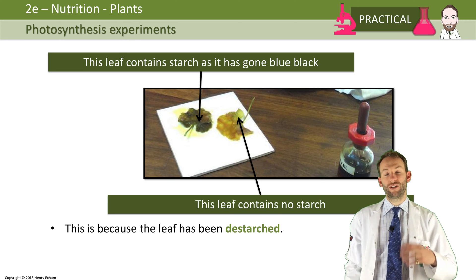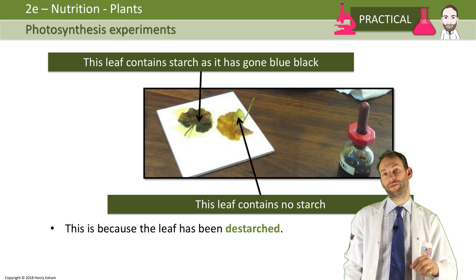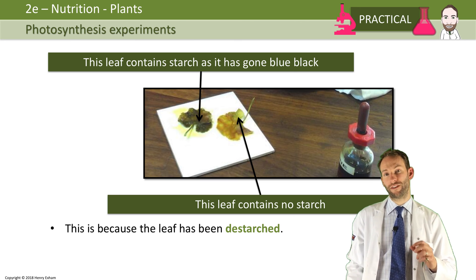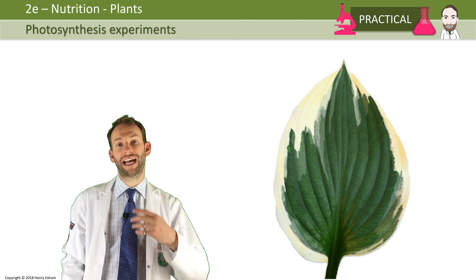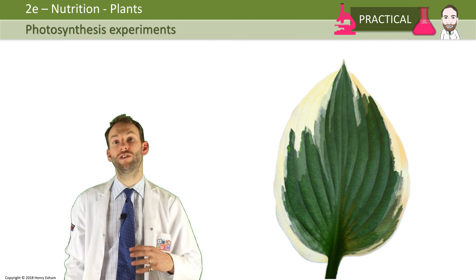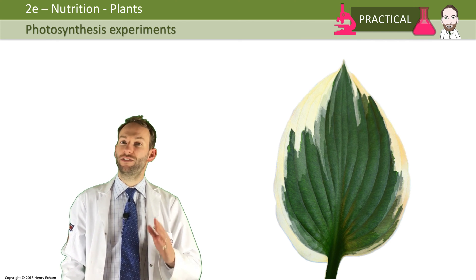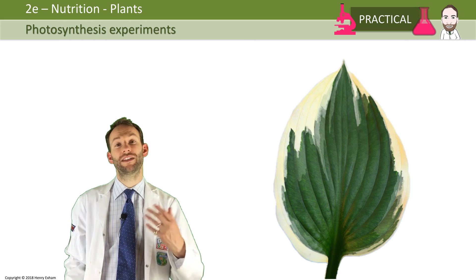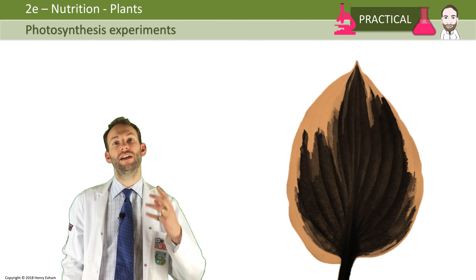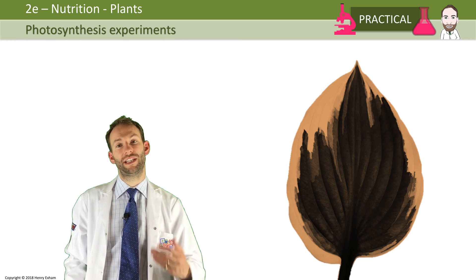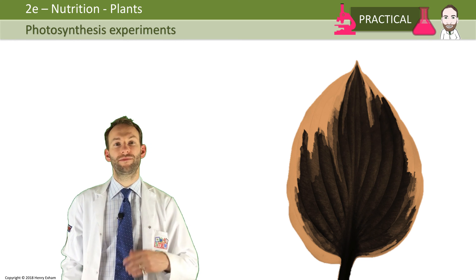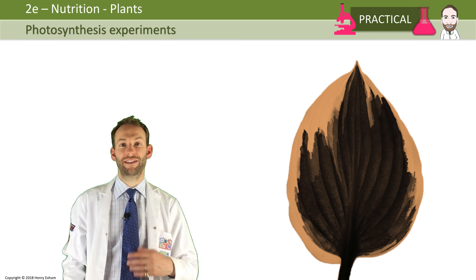You can adapt this experiment to prove that chlorophyll is required for photosynthesis. You can get special leaves called variegated leaves from some plants that have areas of white on them where there's no chlorophyll. If you test that for starch using the starch leaf test, you'll get some kind of results like this where you can see the blue black where the chlorophyll was and the brown yellow where the chlorophyll wasn't, and therefore no starch has been produced.